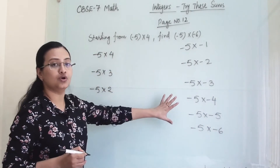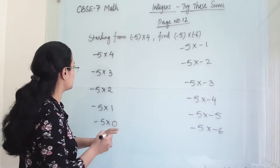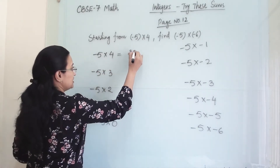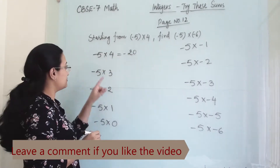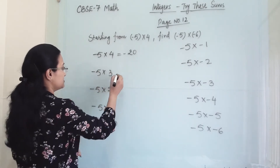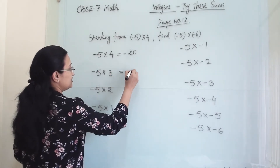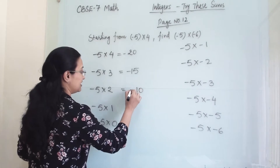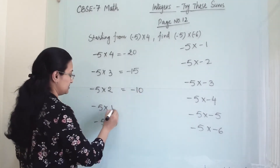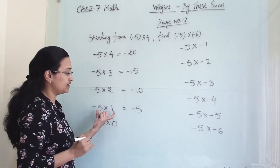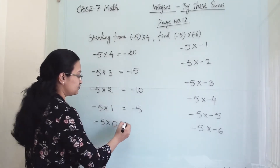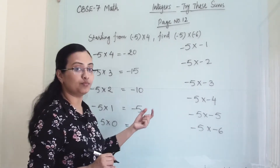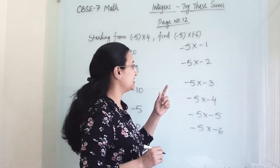We have to multiply all these and write the answers. So (-5) × 4 gives -20, because minus × plus becomes minus. 5 × 3 = 15 and it carries a negative sign. 5 × 2 = 10 and it is minus. 5 × 1 = 5 and it carries a negative sign. (-5) × 0 gives 0 — any positive or negative integer multiplied by 0 gives 0.